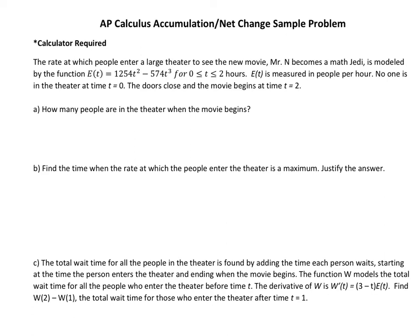A couple things to point out that are really important in this problem. First, this says that it's a rate. Second, no one is in the theater at time t = 0, so there is no initial value for this. How many people are in the theater when the movie begins? If I have a rate and I integrate a rate, I will get a total amount.